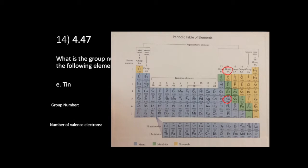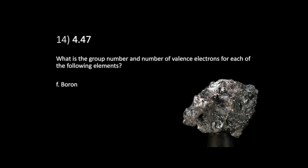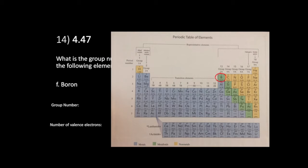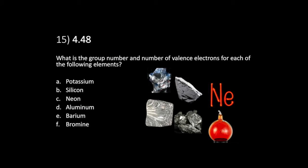How about tin? Tin has the symbol Sn, found at the bottom right; it's in group 4A. The group A number is the number of valence electrons, so tin has four valence electrons. How about boron? Boron is in the middle at the top, in group 3A. It has three valence electrons — like three bumps on a Lego — letting it connect with other atoms.